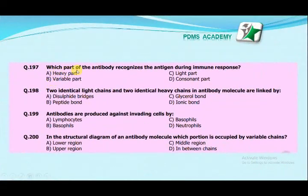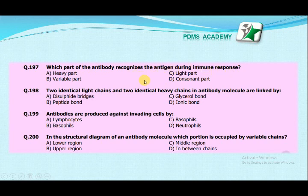Which part of the antibody recognizes the antigen during immune response? Heavy part, light part, variable part, or constant part? The correct answer is the variable part — it is the part that recognizes the antigen during immune response. Two identical light chains and two identical heavy chains in an antibody molecule are linked by disulfide bridges, peptide bonds, glycerol bonds, or ionic bonds?